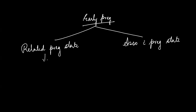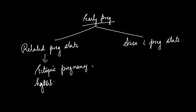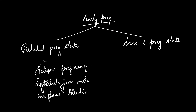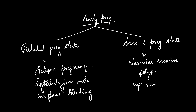Let's see a few examples. Related to the pregnant state, there can be ectopic pregnancy, hydatidiform mole, and implantation bleeding. Talking about something associated with the pregnant state, they can be cervical lesions like vascular erosion, a polyp, a ruptured varicose vein, and even a malignancy.